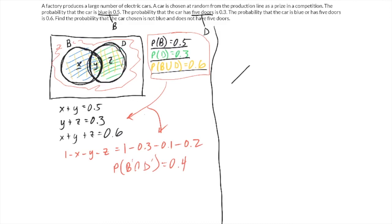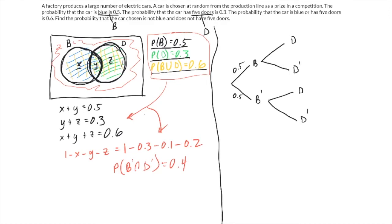I like tree diagrams. So the first event is either it's blue or it's not blue. The probability of being blue is 0.5 — that was given to us. The probability of not being blue is also 0.5. Now, after blue, this is an independent event as far as we know. The probability that the car has five doors is 0.3, but that's not really given to us as independent — we'd like to believe it is, but we don't really know. So we can't put anything in yet because we don't know if the probability of having five doors depends on being blue or not.